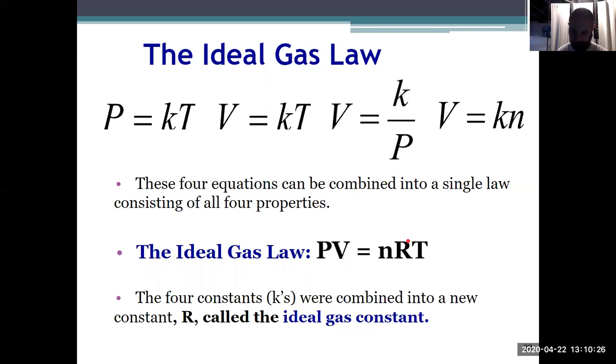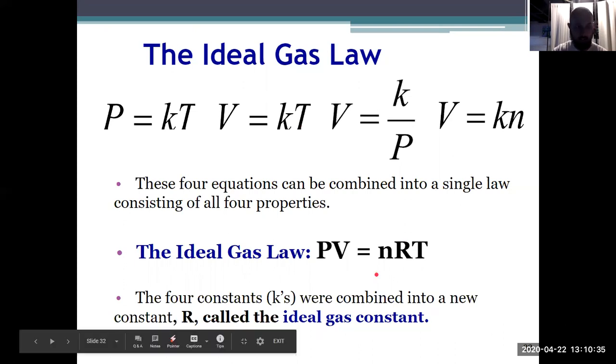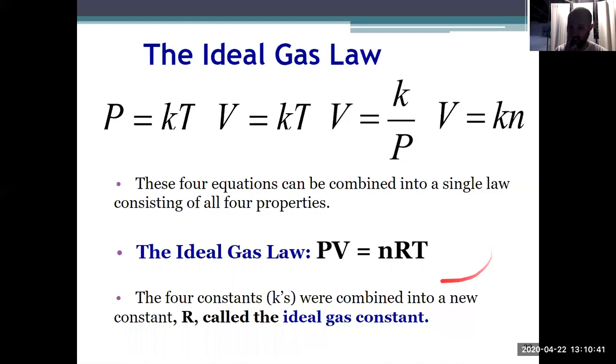So we will learn what that ideal gas constant is in our next video and how to use the ideal gas law. The takeaway here from the second video is those individual relationships and knowing that they can all be put together into the ideal gas law: PV equals NRT, the equation we'll use more than any other in chapter 9.